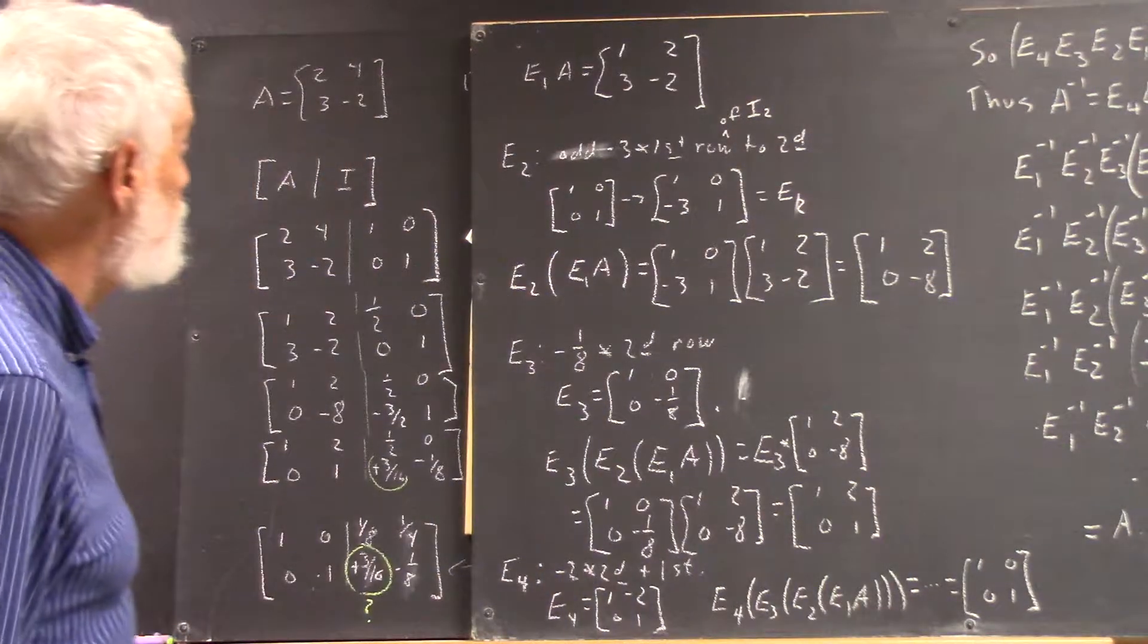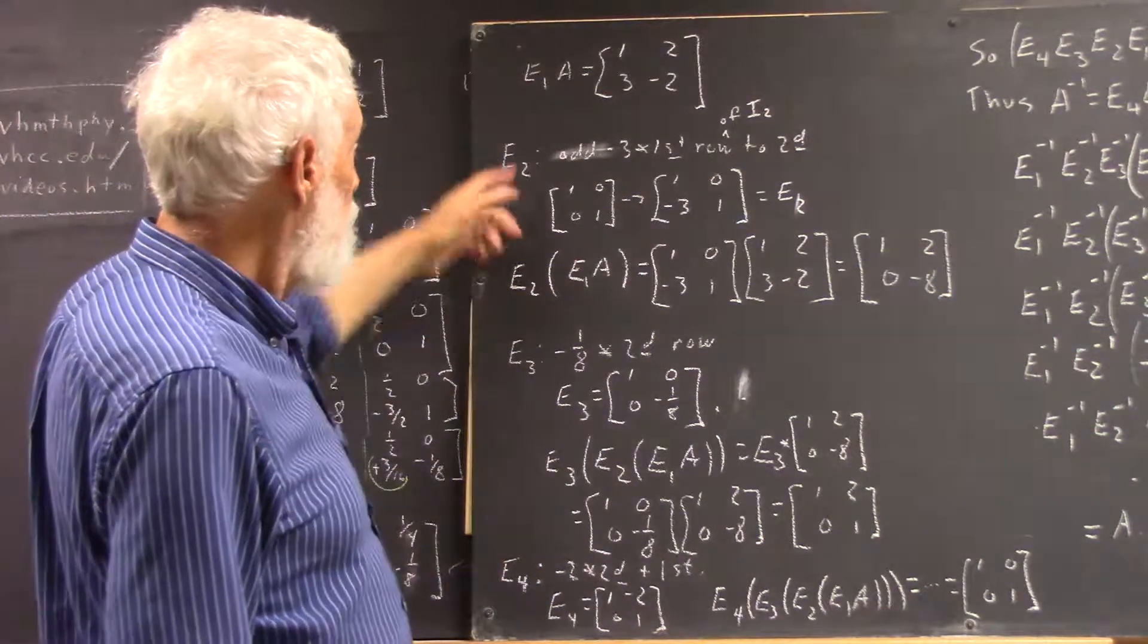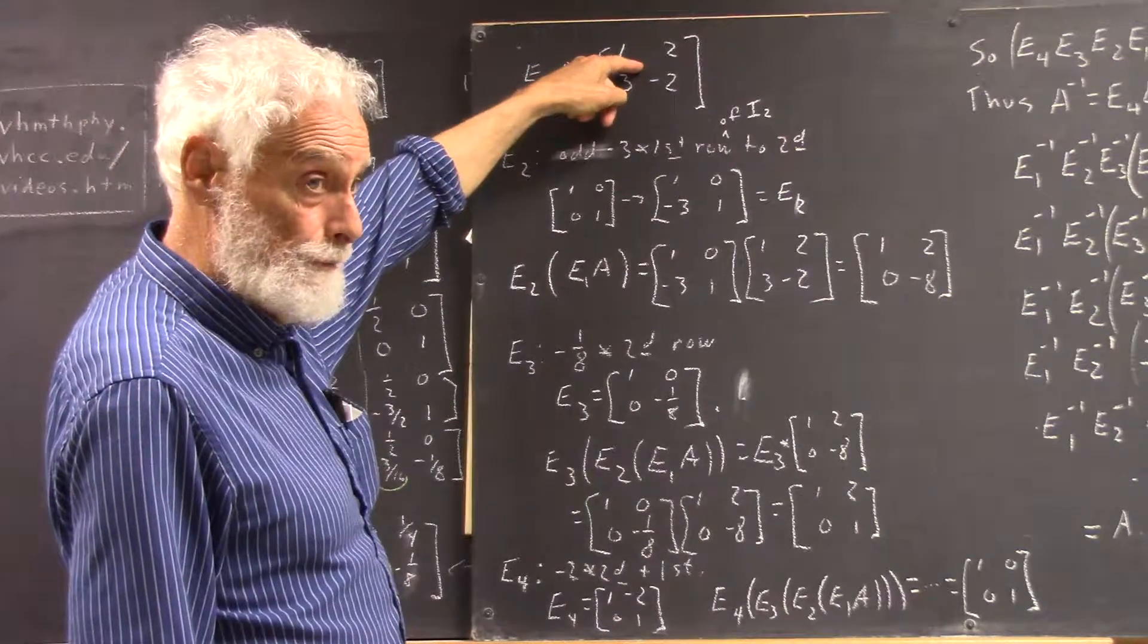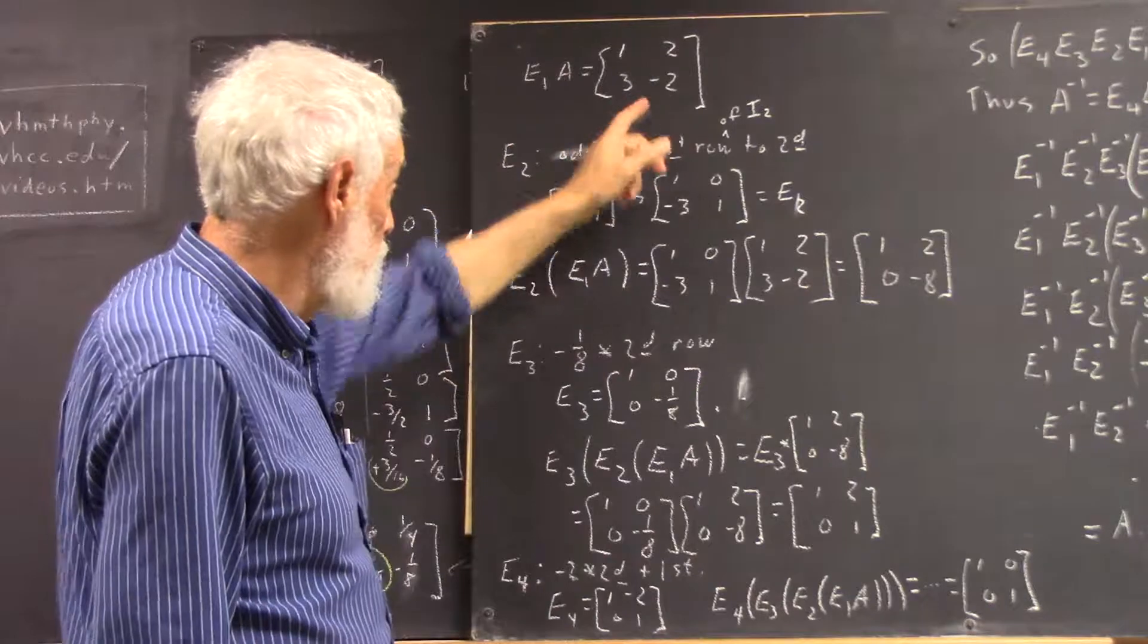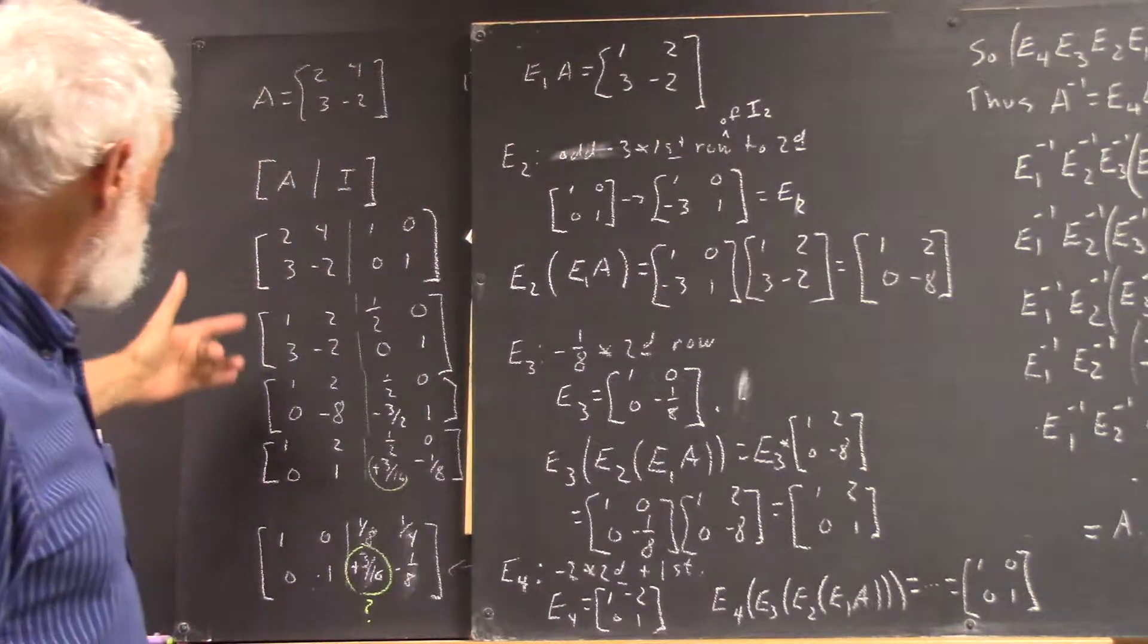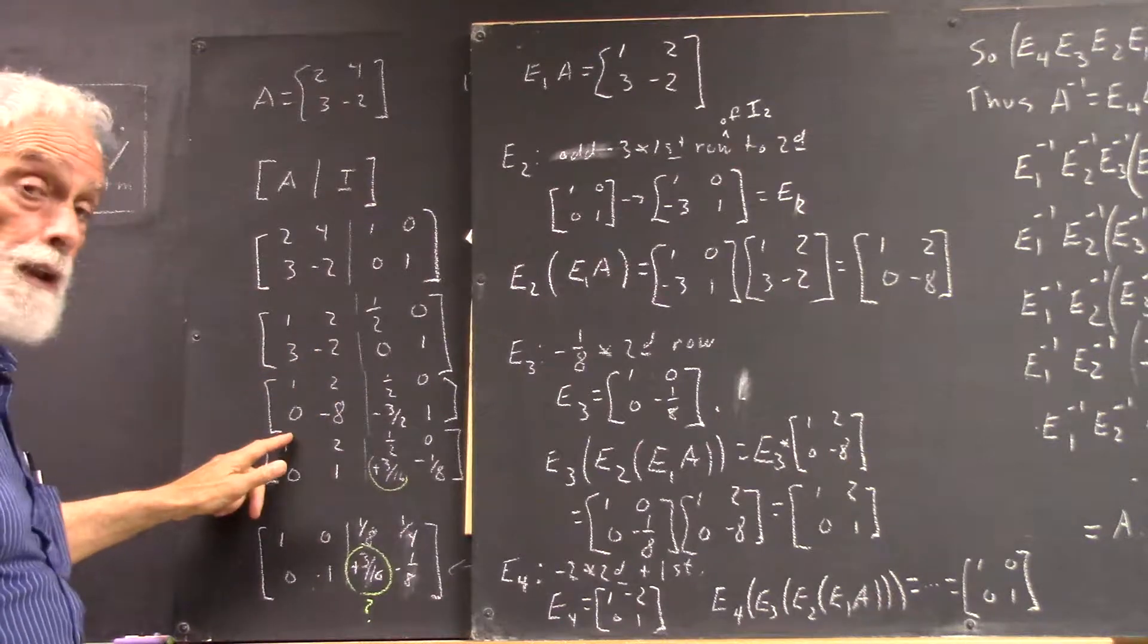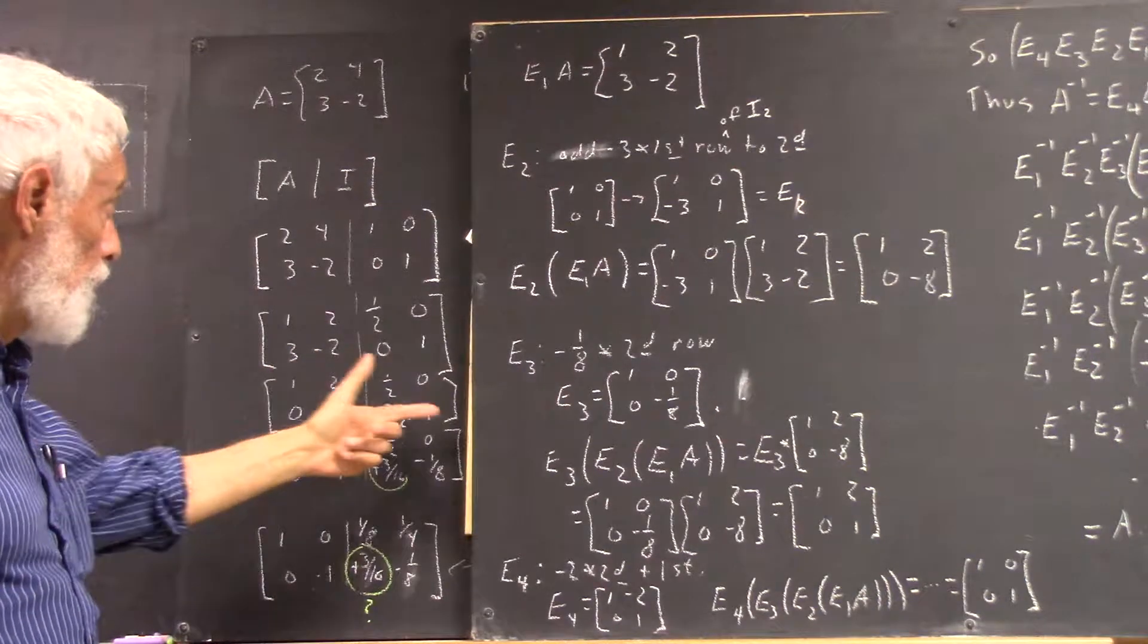Our next step. Well, first of all, just to summarize where we were, we know that E1 times A was this. We multiply E1 by A, and we got this. Now, what's our next step here? We added negative three times this row to this row in order to get a zero here. And we got all this.